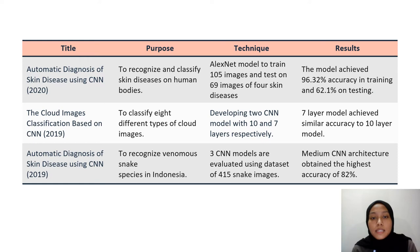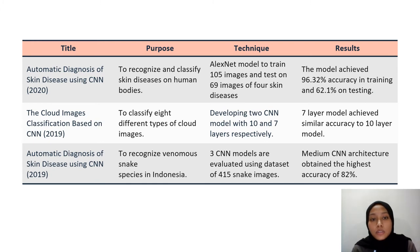Lastly, the third literature is image-based classification of snake species using CNN, conducted in 2019. The objective is to recognize venomous snake species in Indonesia. The classification was done using three CNN models: a shallow model, a medium model, and a deep model. All three models have different numbers of layers and were used to classify 415 snake images. The result showed that the medium model achieved the highest accuracy, because the shallow architecture had insufficient filters while the deep model had too many filters, making it too complex.